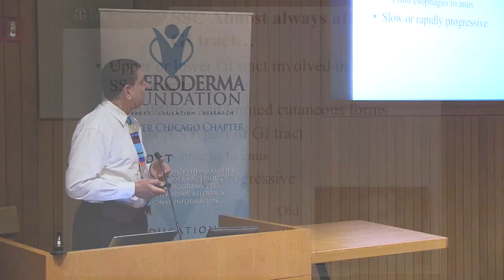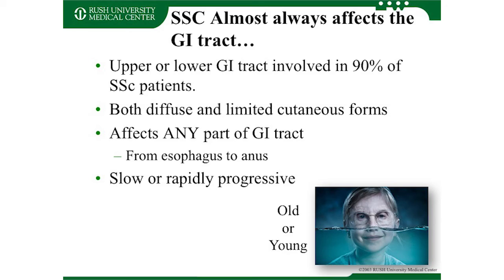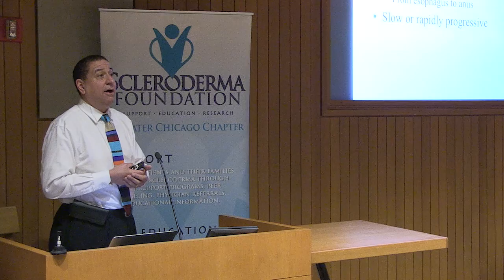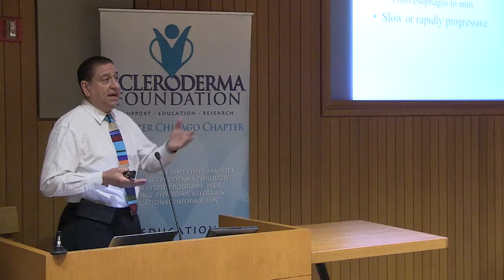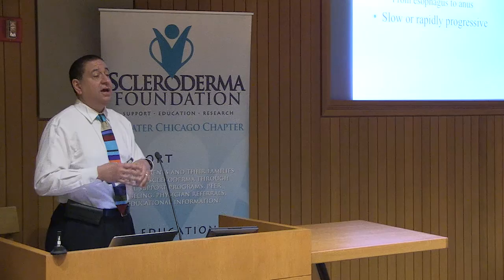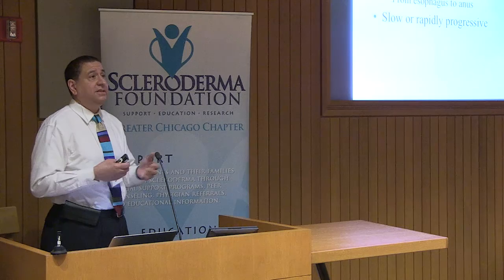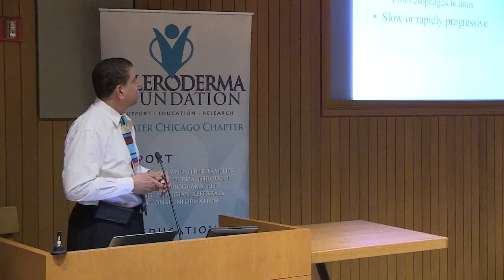The GI tract is almost always involved in scleroderma — about 90% of patients. If you're newly diagnosed, besides seeing your rheumatologist, you need to see a gastroenterologist even if you have no GI symptoms, because what I want to do is prevent progression to things like esophageal scarring, severe constipation, and fecal incontinence. I can help even before symptoms take hold.